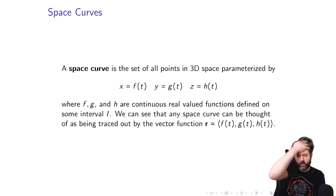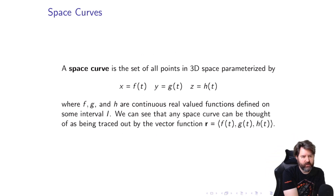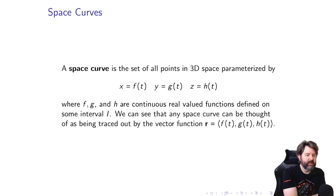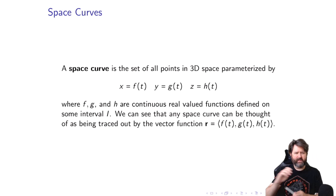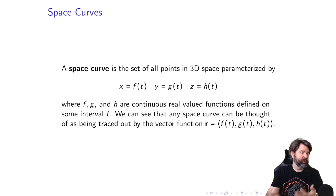Moving along — a space curve is the set of all points in three-dimensional space parameterized by X equals F of T, Y equals G of T, and Z equals H of T, where F, G, and H are continuous real-valued functions defined on some interval I. Basically, it's just a parametric curve in space. In chapter 10, we looked at plane curves with just X and Y; now we add Z equals H of T.